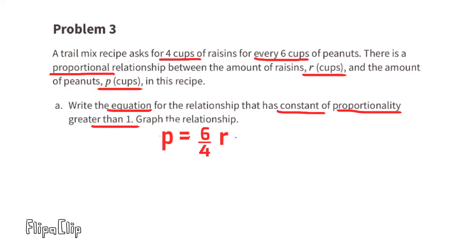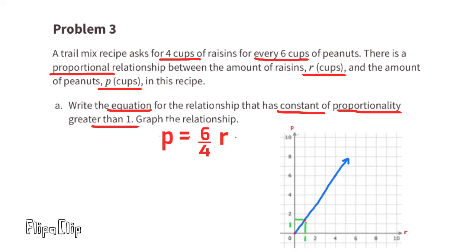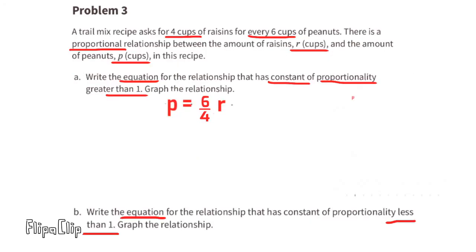In this graph, raisins are on the horizontal axis and peanuts are on the vertical axis. For every four cups of raisins horizontally, there are six cups of peanuts vertically. Part B: write the equation for the relationship that has a constant of proportionality less than one and graph the relationship.